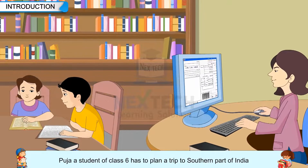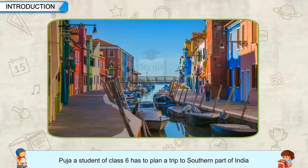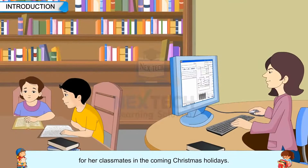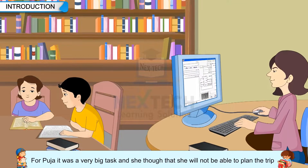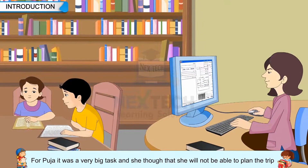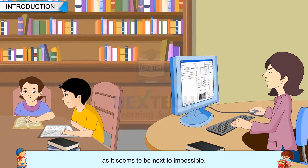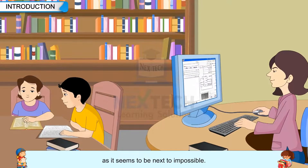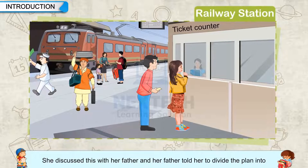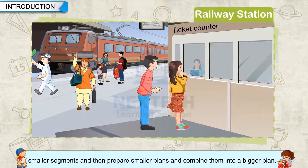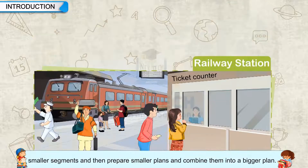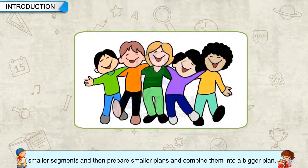Pooja, a student of class 6, has to plan a trip to the southern part of India for her classmates in the coming Christmas holidays. For Pooja, it was a very big task and she thought she would not be able to plan the trip, as it seemed next to impossible. She discussed this with her father, and her father told her to divide the plan into smaller segments, then prepare smaller plans and combine them into a bigger plan.